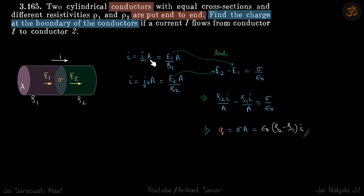Current density into area, and J is sigma E, or we can write as E1 by Rho1 times A. Now you can see that for both conductors, area is the same and current is the same, which means the ratio of E1 by Rho1 should be the same for both mediums, and Rho is different.